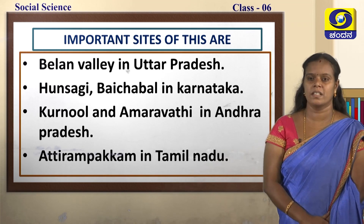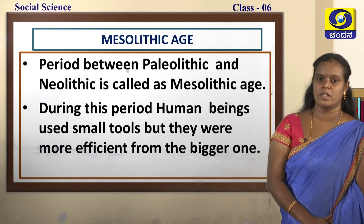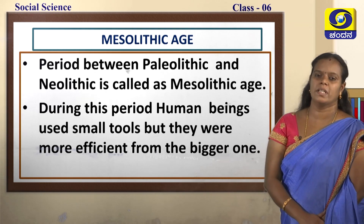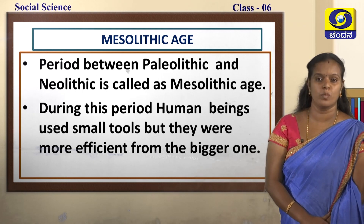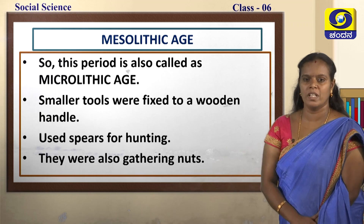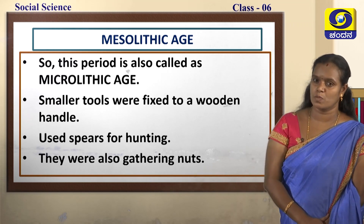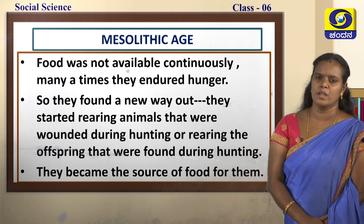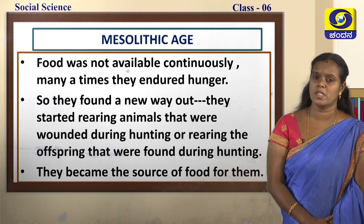Next, we will move on to the Mesolithic age. The period between Paleolithic and Neolithic age is called the Mesolithic age. During this period human beings used small tools, but these small tools were more efficient than the bigger ones. So this period is also called the Microlithic age — micro means small. The smaller tools were fixed to a wooden handle and they used spears for hunting. A spear is a weapon with a pointed edge used for hunting.